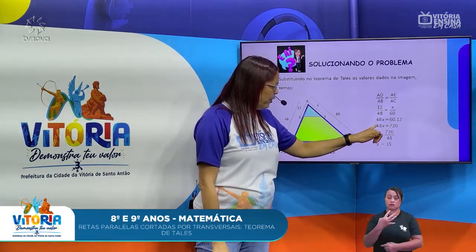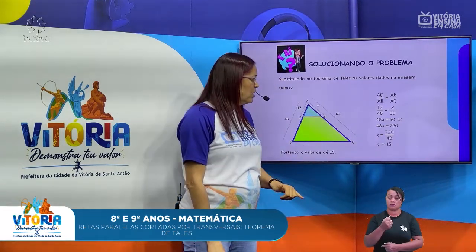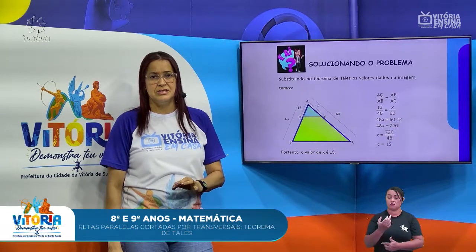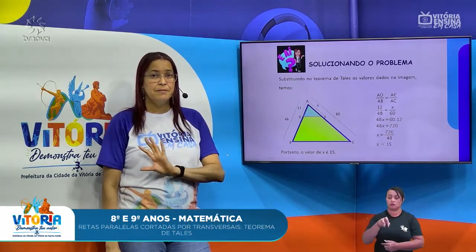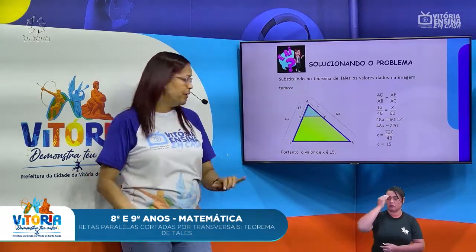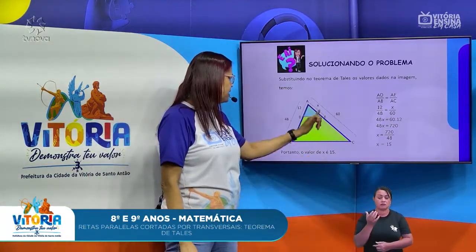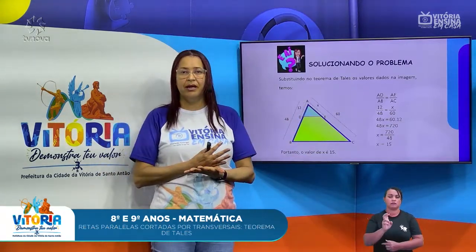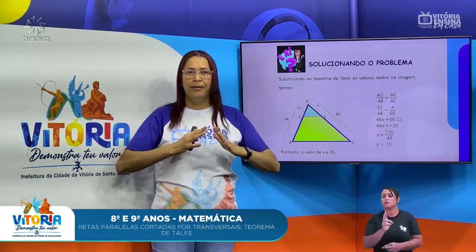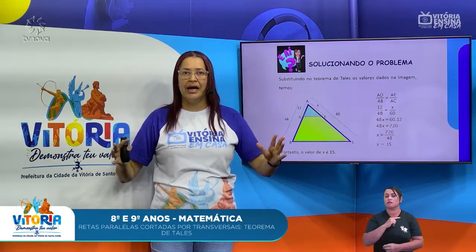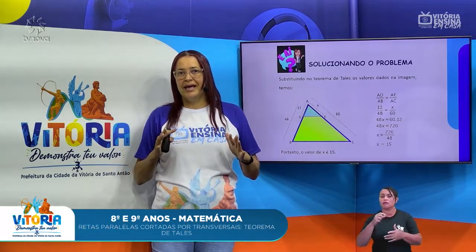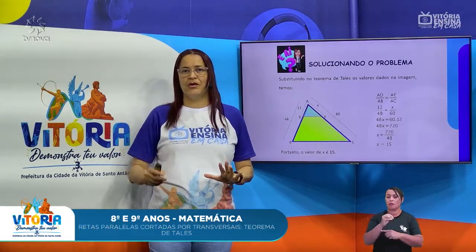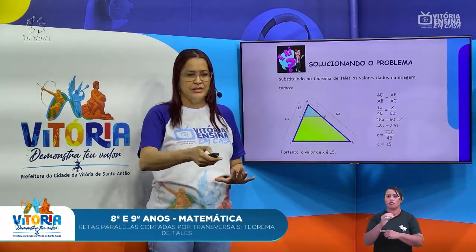48 vai passar dividindo. 720 dividido por 48 é igual a 15. O valor de X é 15. A gente chega à conclusão de que há uma proporcionalidade, e não tem bicho de sete cabeças em trabalhar com o Teorema de Tales de Mileto.